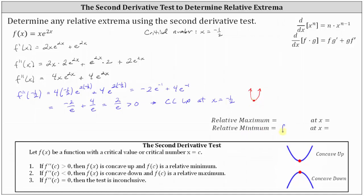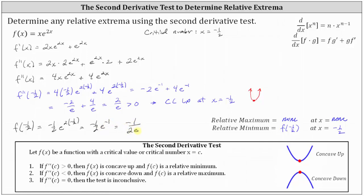We state the relative minimum is f of negative one half, and there is no relative maximum. To find the exact relative minimum value, we compute f of negative one half equals negative one half times e to the power of 2 times negative one half, which equals negative one half times e to the negative 1, written as negative 1 divided by 2e, approximately negative 0.184. We give the exact value of negative 1 divided by 2e.